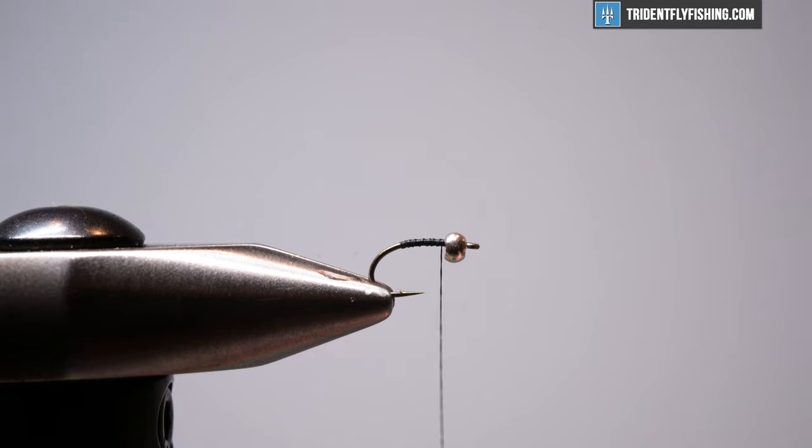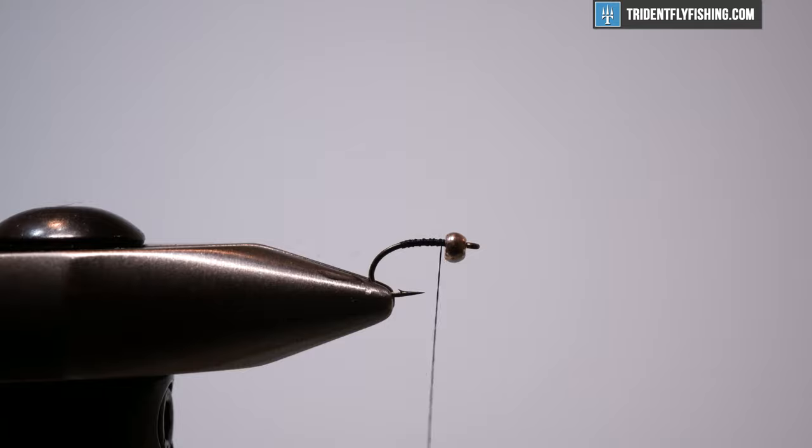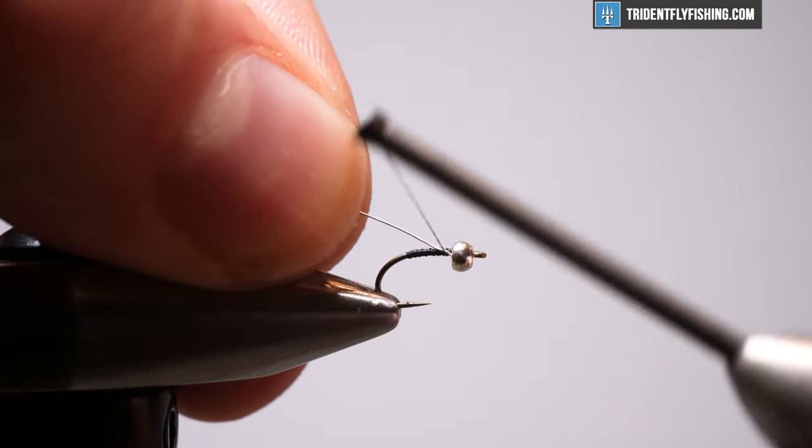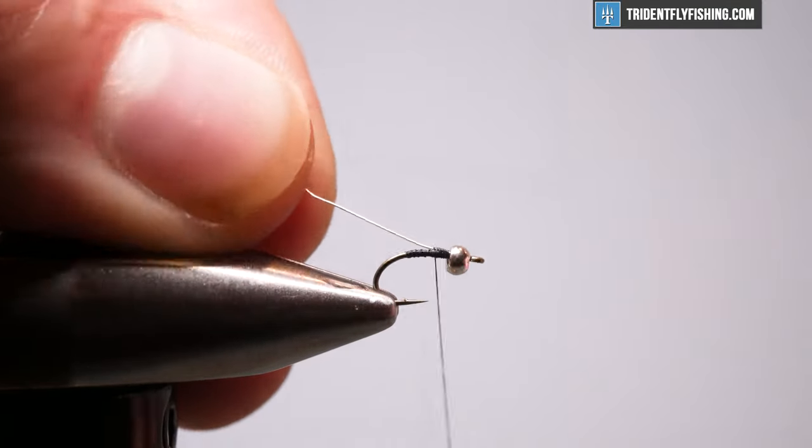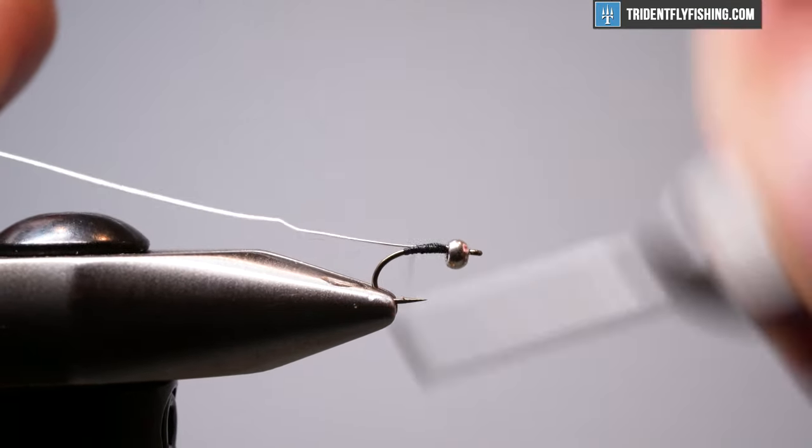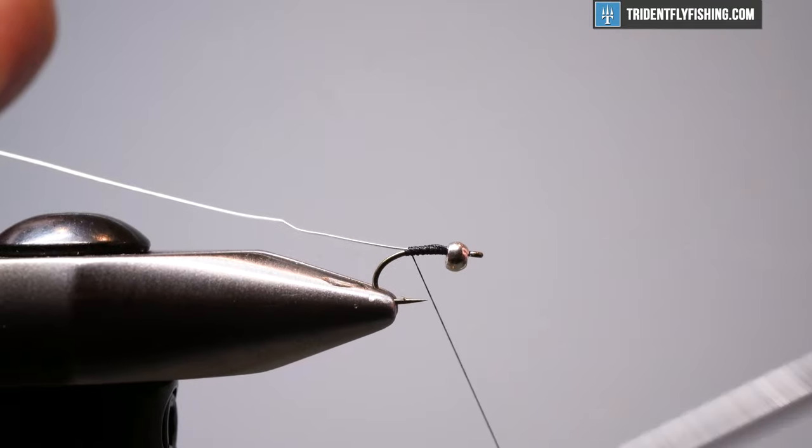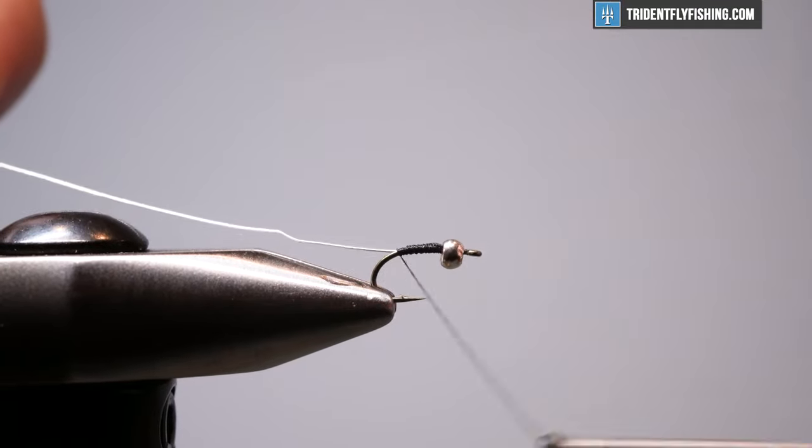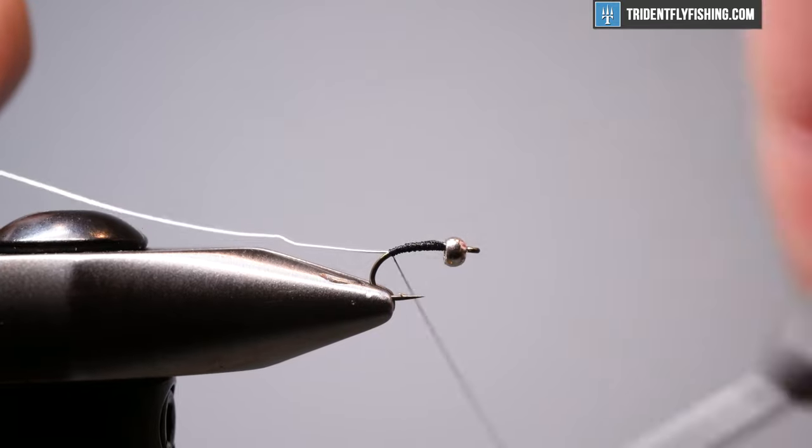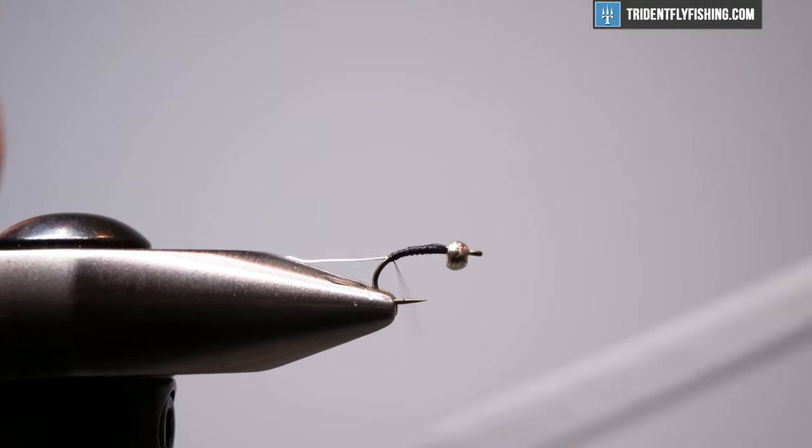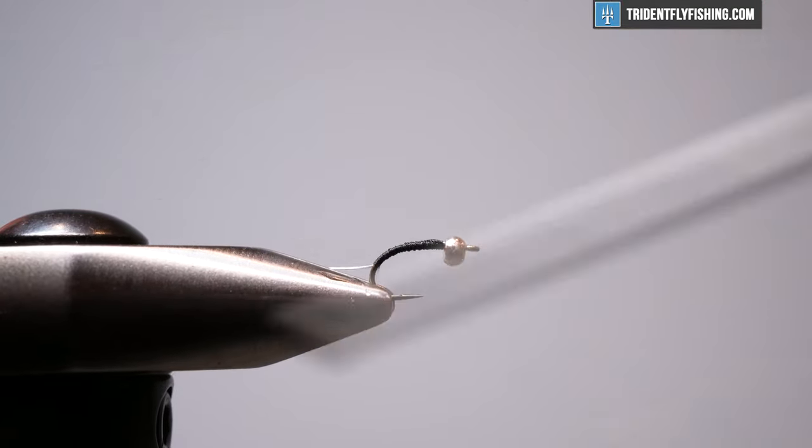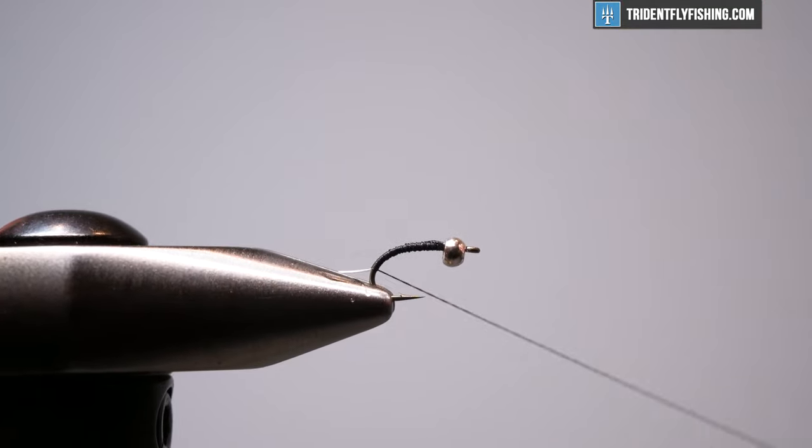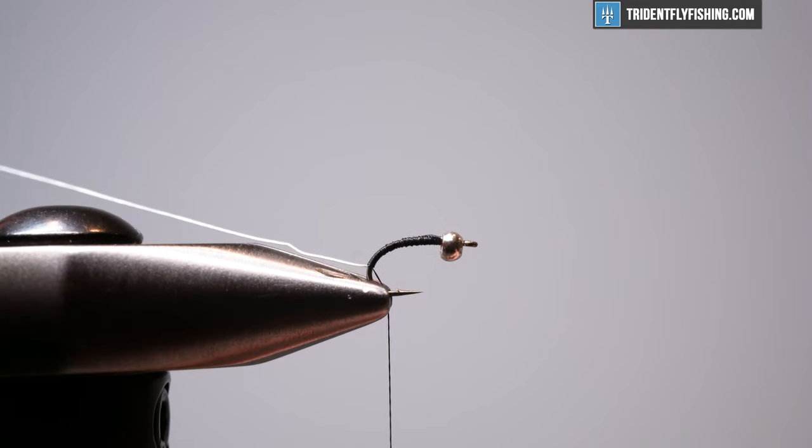The next thing we're going to do is tie on some UTC wire, and I have small silver. So I like to get a nice little thread base going before I tie that in. Tie it on my side of the hook, and then we're just going to bring it around to the far side of the hook. It's just going to make it when we wrap this forward easier so that it doesn't interfere with our tail. We're going to bring this down pretty far, about there, down the bend.